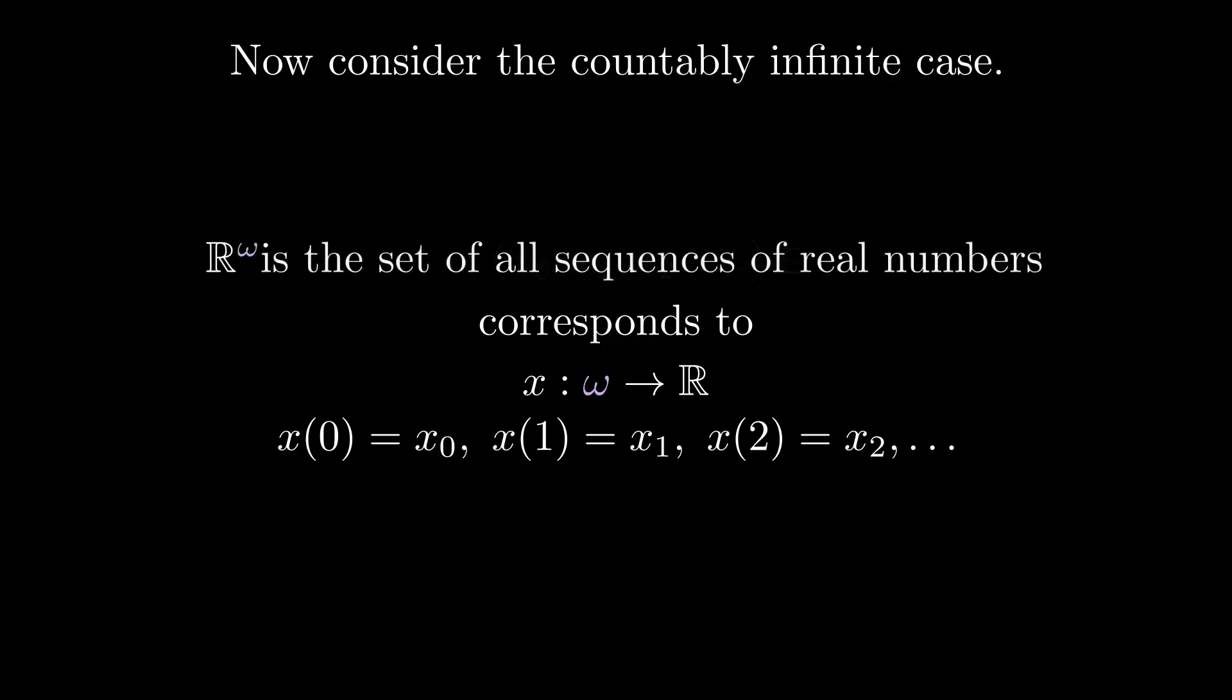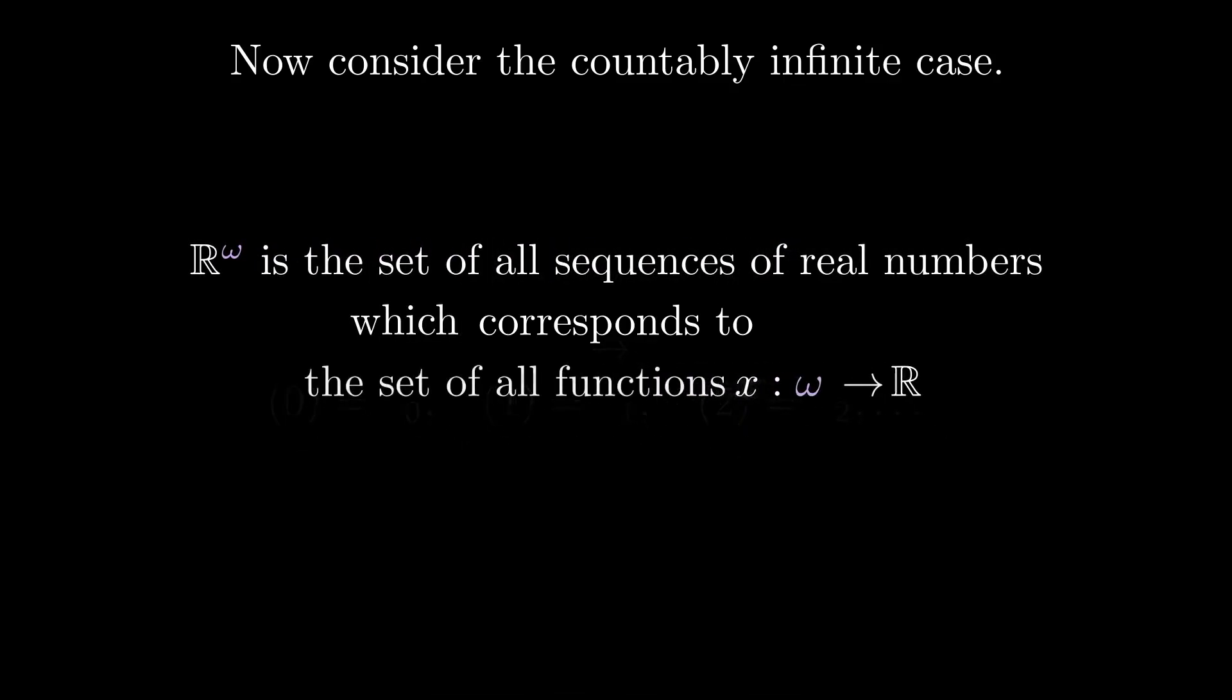Now consider the countably infinite case. A typical element of R omega looks like a point with a countably infinite number of coordinates. And as before, this corresponds to a real valued function whose domain is omega. In other words, R omega is just the set of all real valued functions whose domain is omega.